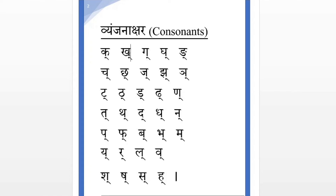Now we can read the consonants: K, K, G, K, N, Ch, Ch, J, Ch, N, T, T, D, T, N, T, T, D, T, N, P, P, B, P, M, Y, R, L, V, S, S, H. Here you can see the first letter K is being pronounced in its base sound.